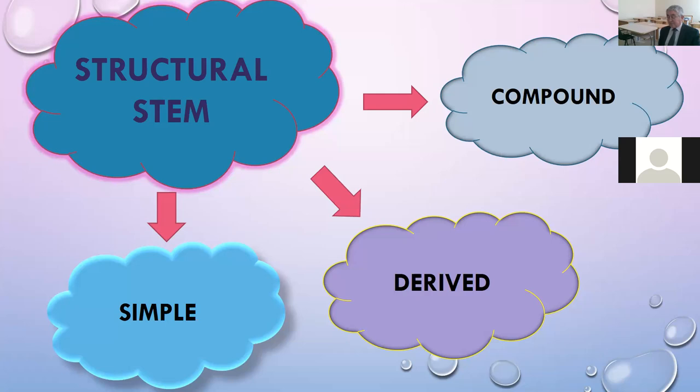Compound stems are stems which consist of two or more stems. For example, matchbox, paintbox, playboy, bookcase, door handle, and so forth.